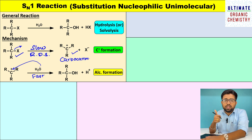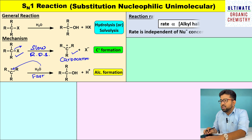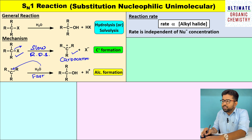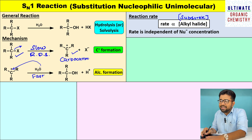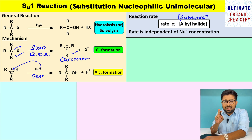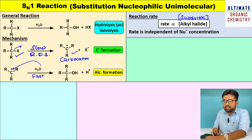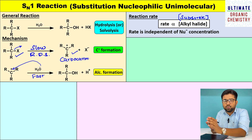With this information, we can write the rate law of SN1 reaction. The rate is directly proportional to the concentration of alkyl halide, or in other words, the concentration of the substrate. If you check the rate law, there is only one molecule — the alkyl halide — present in the rate determining step. That is why this reaction is called as a unimolecular reaction.